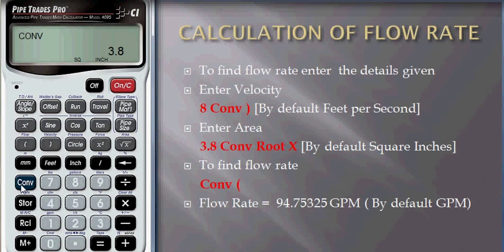To find the flow rate, just press convert and open bracket symbol. There we can find flow rate as 94.75325 gallons per minute. By default it will store as gallons per minute, but we can convert into anything.